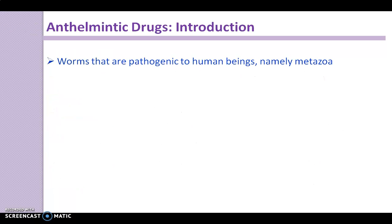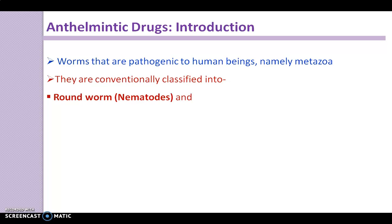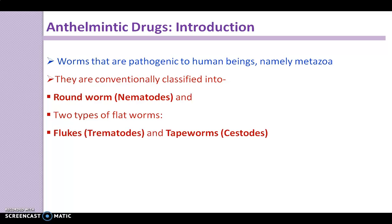In this slide, we discuss about the different types of helminths. Worms that are pathogenic to human beings, namely metazoa, are conventionally classified into roundworms, also called nematodes, and two types of flatworms: namely flukes, which are trematodes, and tapeworms, that is, cestodes. These are the common helminths which affect the host.